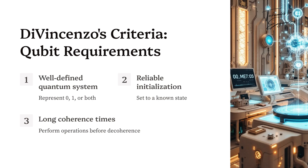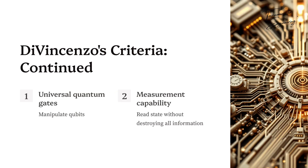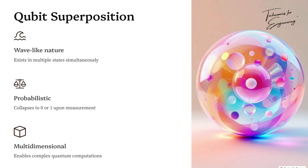These include: a well-defined quantum system that can represent zero, one, or both; the ability to reliably initialize it into a known state; long enough coherence times to perform operations before it decoheres; a universal set of quantum gates to manipulate qubits; and the capability to measure the state without destroying all the information.